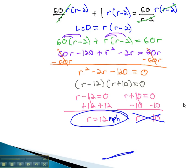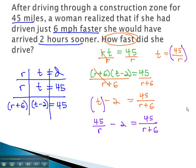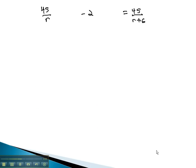Let's take a look at that second problem we set up. We had a woman driving through a construction zone who found out that if she had driven faster, she would have arrived sooner. We came up with this equation, so let's try and solve this equation in order to find out how fast she actually drove.